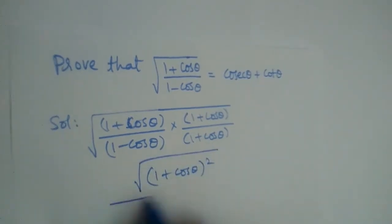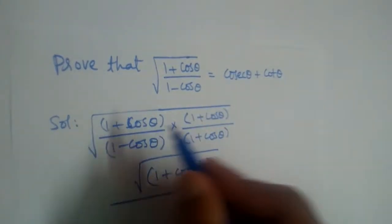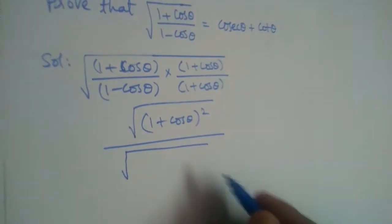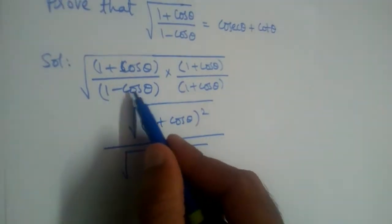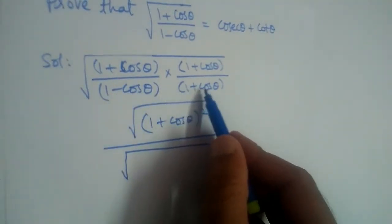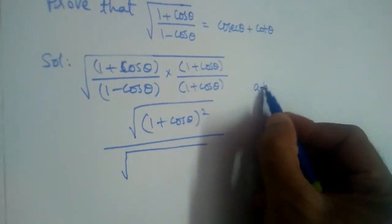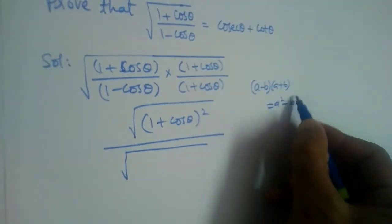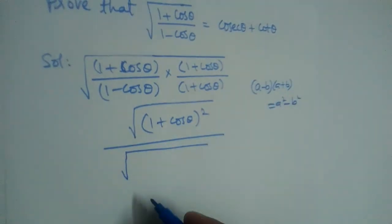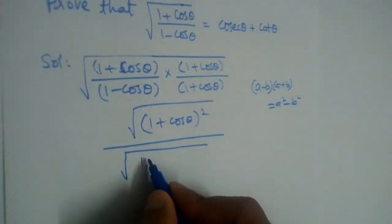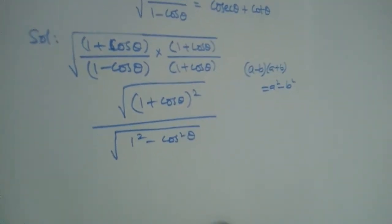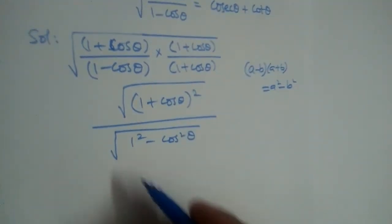We have a square root, and we are writing the square root separately to the numerator and to the denominator. Now what is in the denominator? 1 minus cos multiplied by 1 plus cos — it is a minus b, a plus b, so it will be a squared minus b squared. So it will be 1 squared minus cos squared theta.